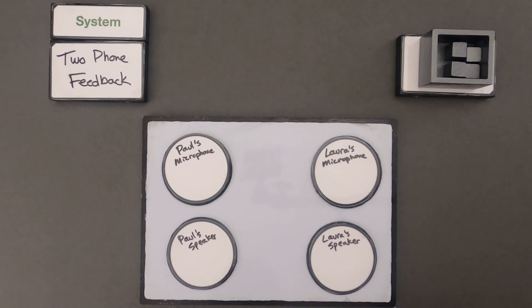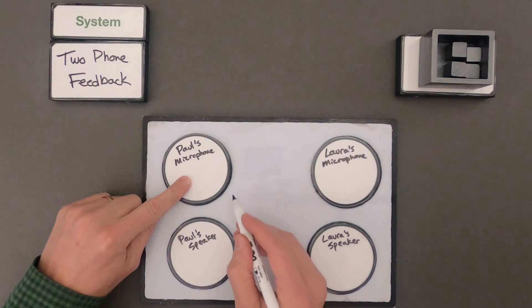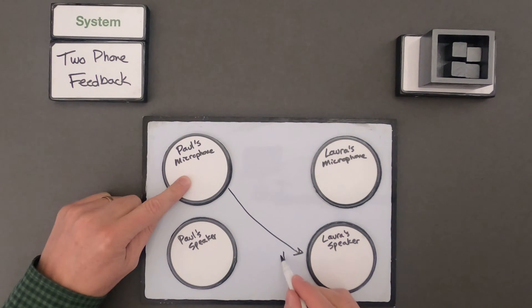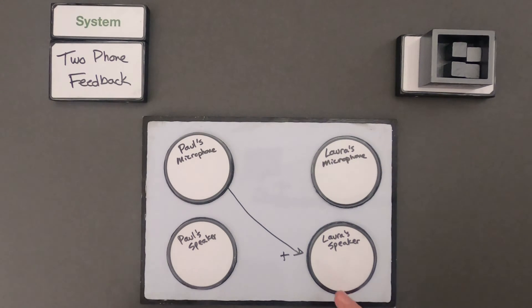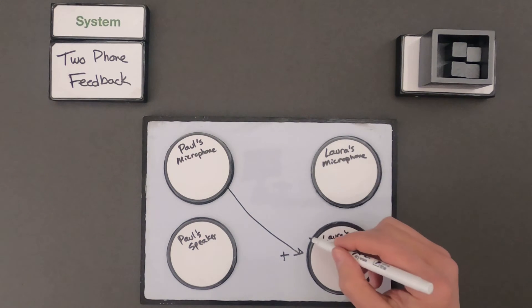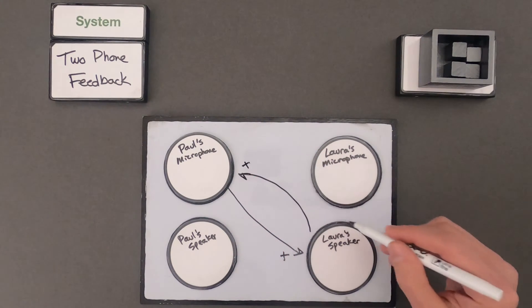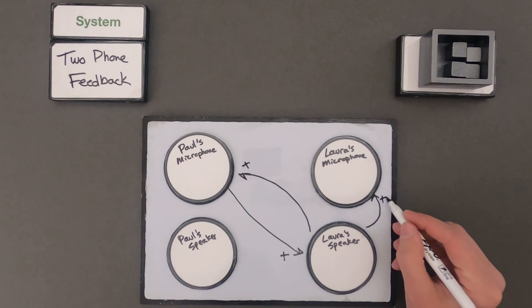Okay, if I were to draw connections, the first thing is that when I'm speaking into my microphone, that is going to Laura's speaker. And so we would call that a positive relationship. If I increase my volume into the microphone, that increases the volume coming out of the speaker. Now where does the sound come out of the speaker? It's going to go back to my microphone. So there's a positive there. And there's also going to be a positive to Laura's microphone itself.